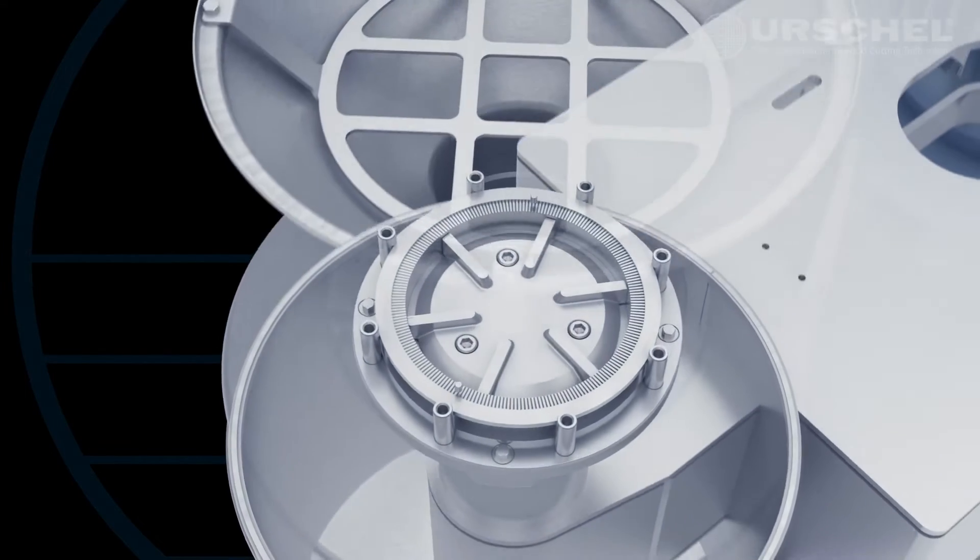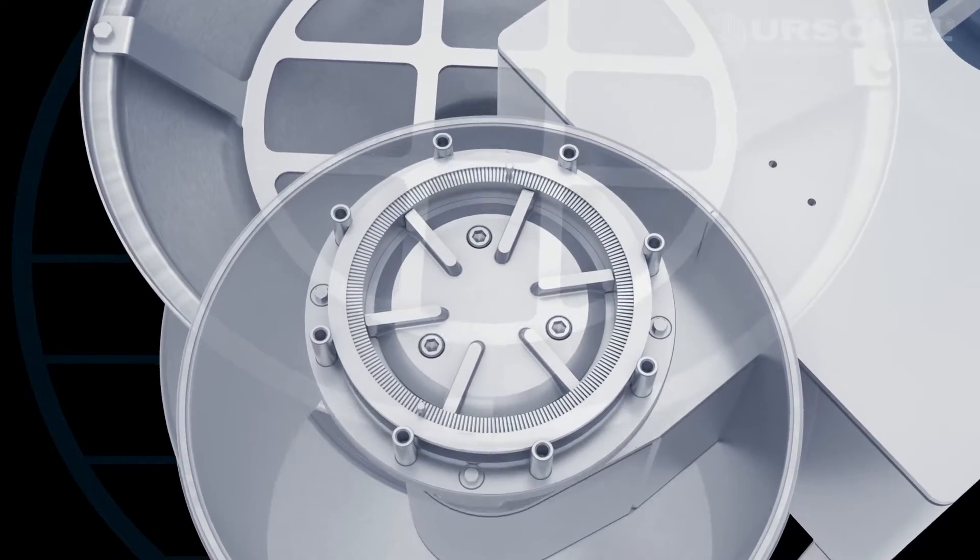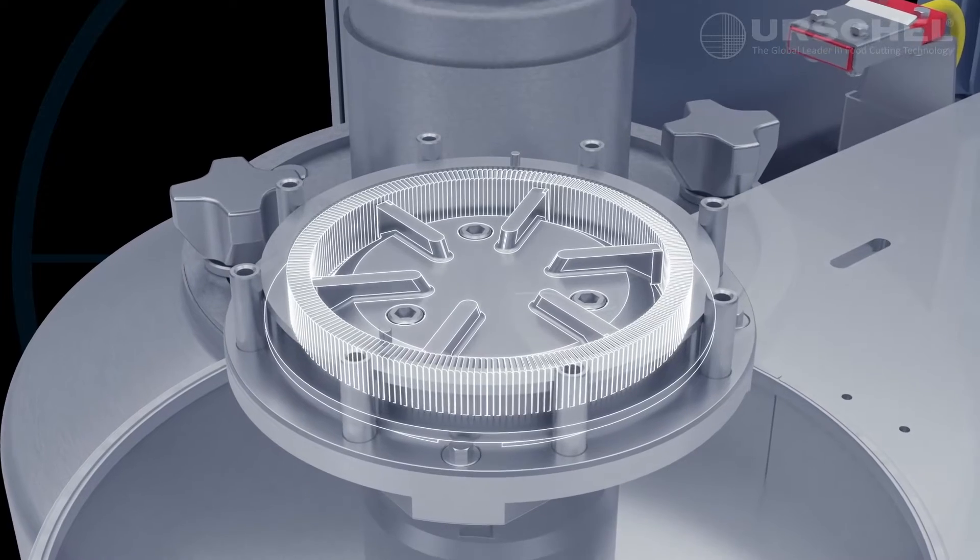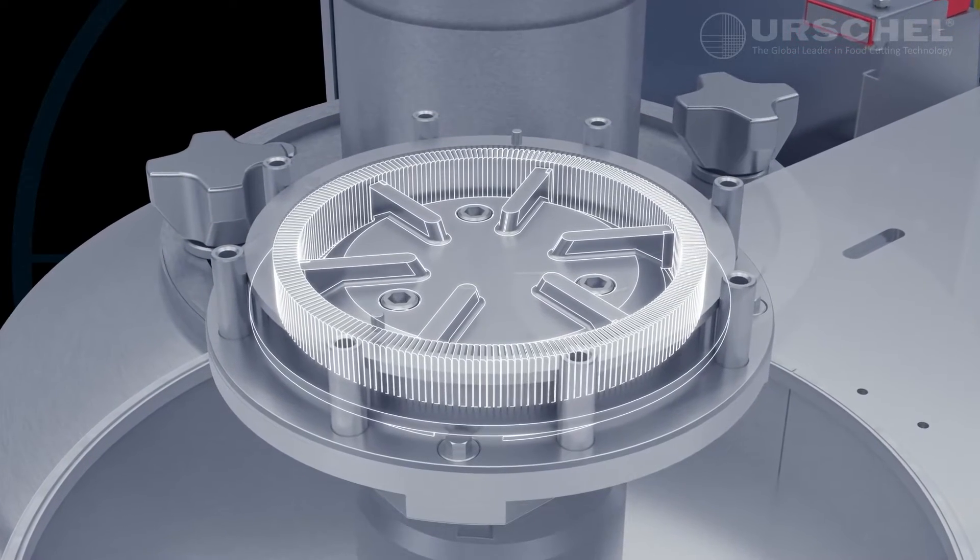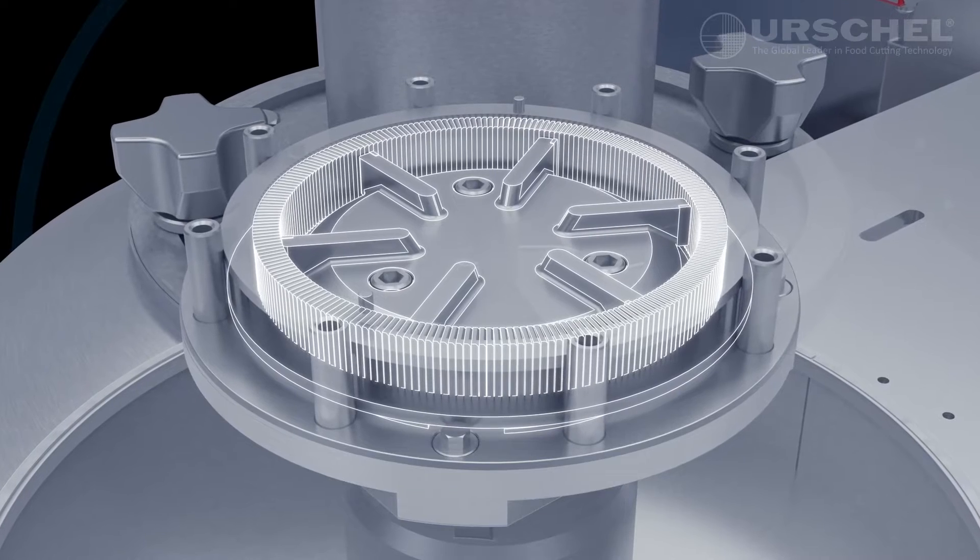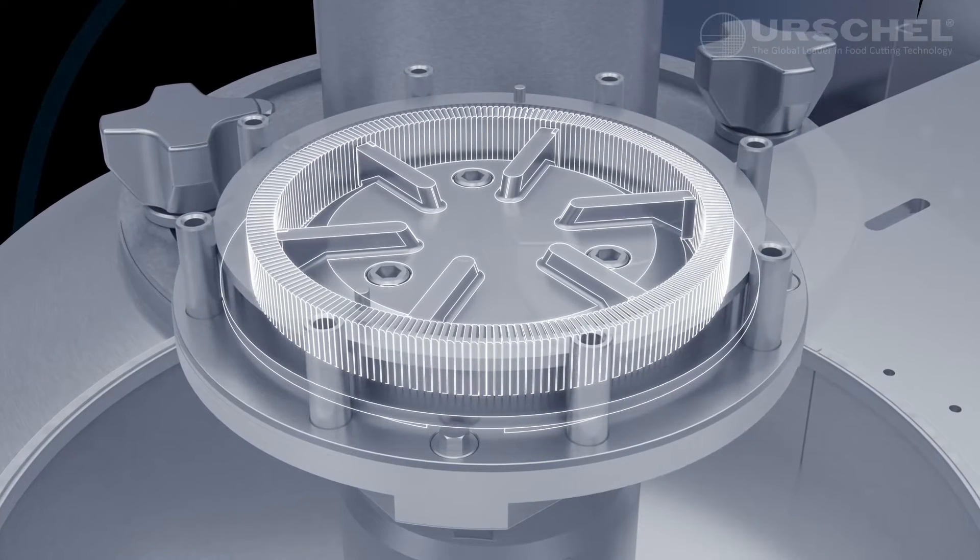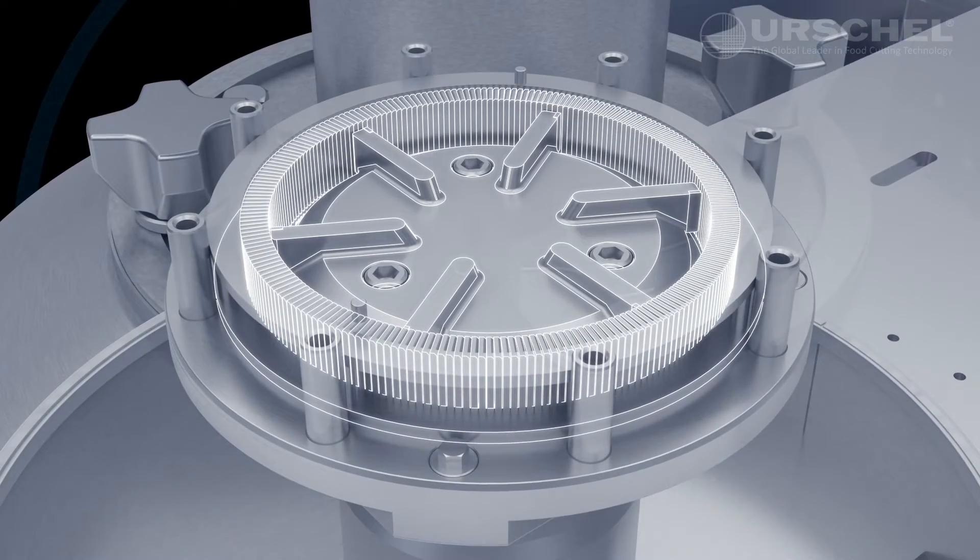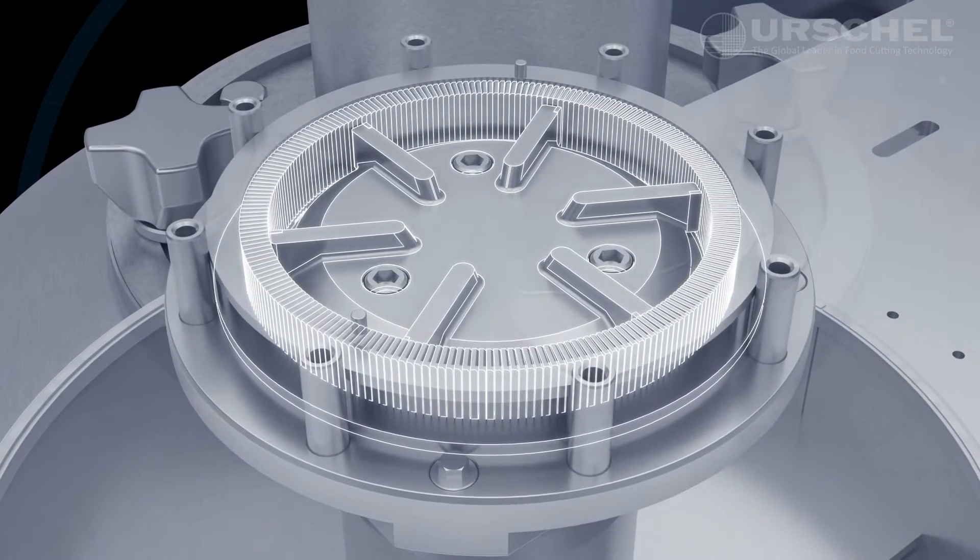Now let's take a closer look at the second type of reduction head available, the micro cut head. This head is comprised of a 6 inch 153 millimeter diameter ring of closely spaced blades. The leading edge of each blade is a sharp sheer edge and the blades are carefully positioned to effectively reduce products down to micro dimensions.